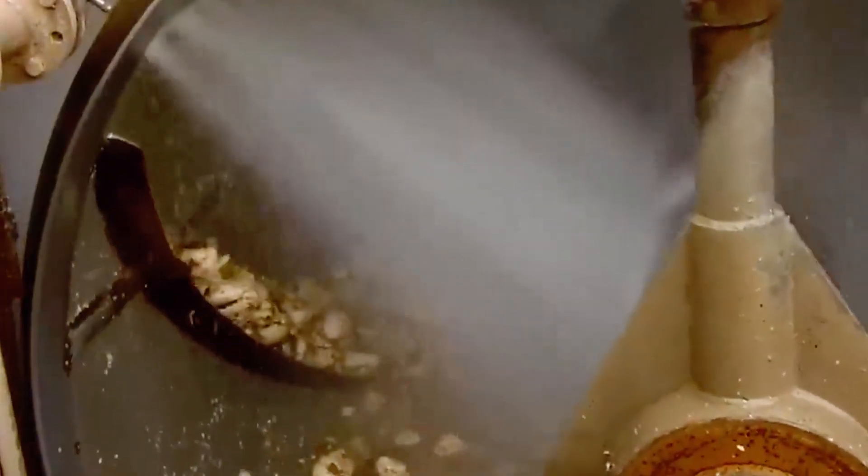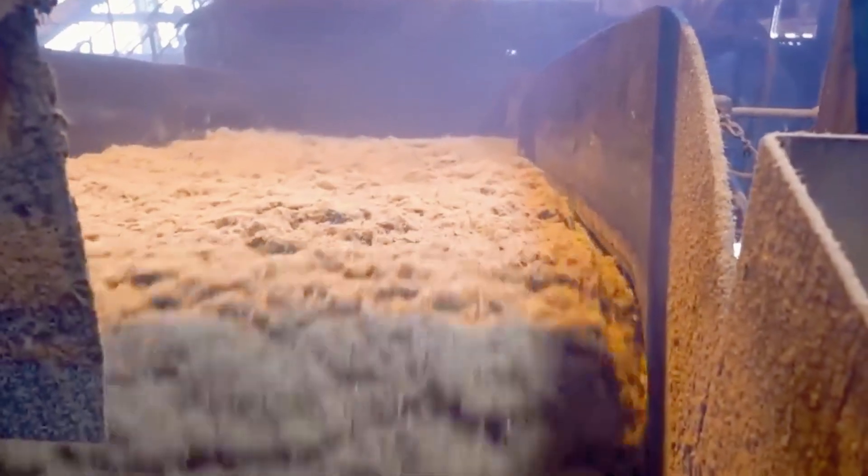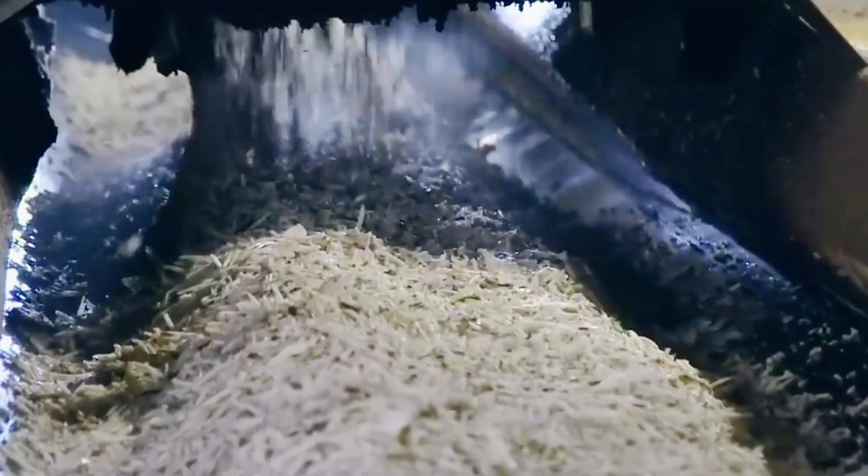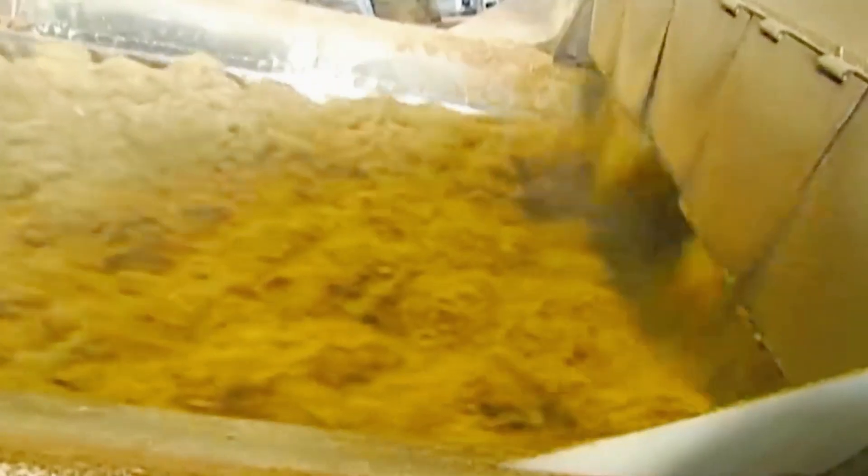With sugar beets, the process is a little different. The beets are sliced into thin strips, known as cassettes, and then soaked in hot water to extract the sugar. The water helps dissolve the sugar from the beets, producing a sweet liquid, which is the beginning of our journey toward refined sugar.